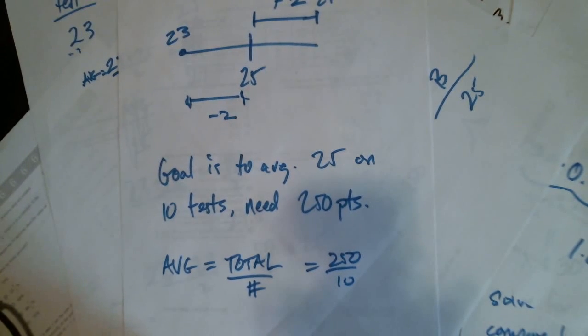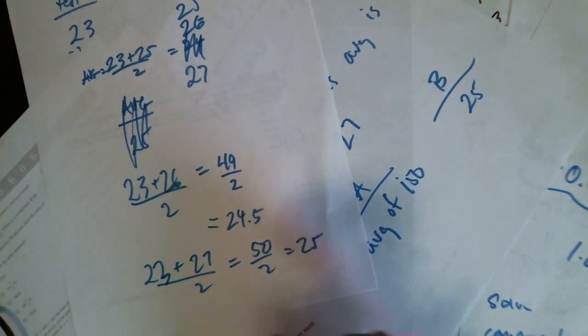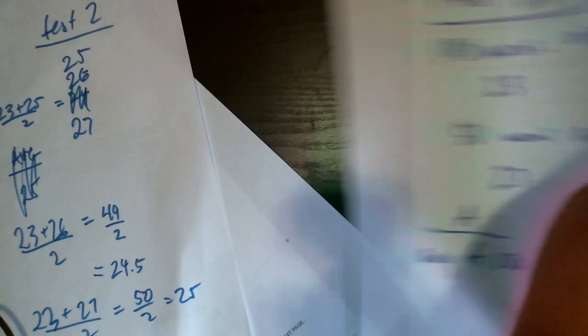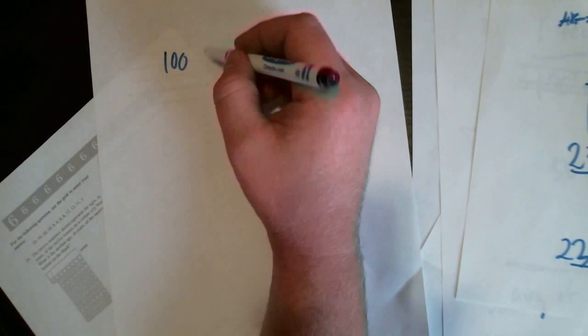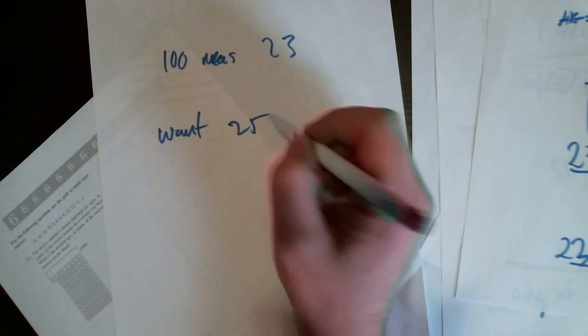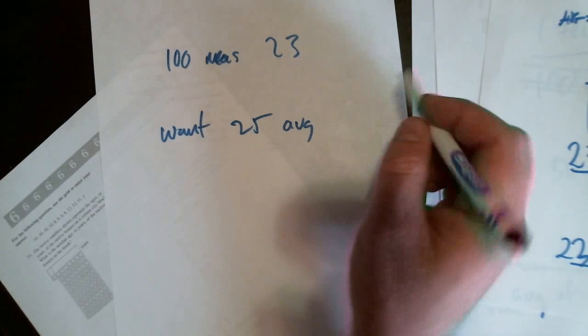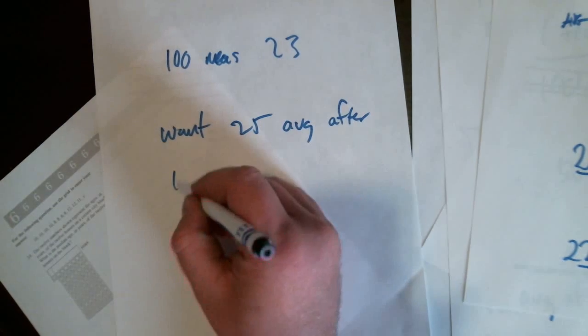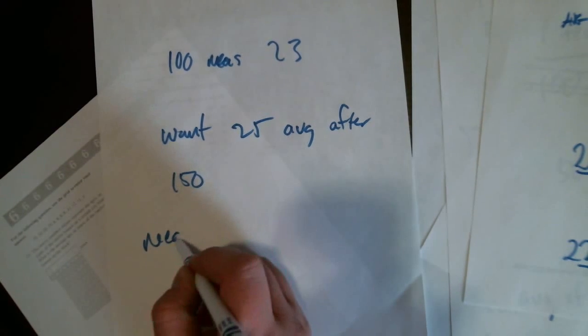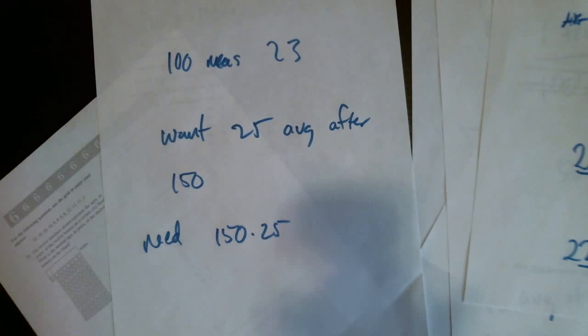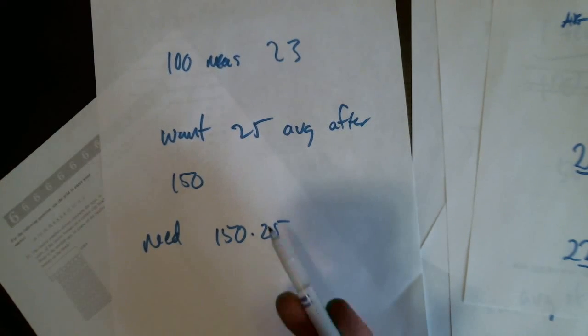So thinking about it that way, if I want to average twenty-five on my measurement... What was it? You had a hundred measurements for twenty-three, an average of twenty-three. And we want twenty-five to be our average after one-fifty. So we need for our total, we need a hundred and fifty times twenty-five. I'm going to add it all up. You know, figure out, like, thinking of it as a target at the end. Like, how many do we want to accumulate by the end?